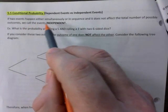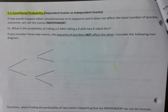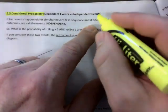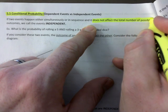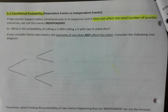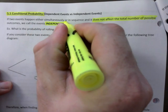We call those events independent. I'm going to highlight this part. You notice that it does not affect the total number of outcomes possible. Whatever happens before has no impact on the possible outcomes. So those are called independent events.